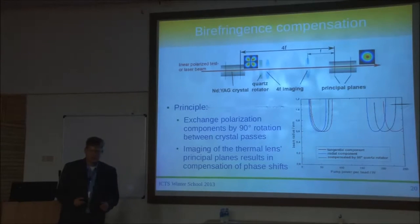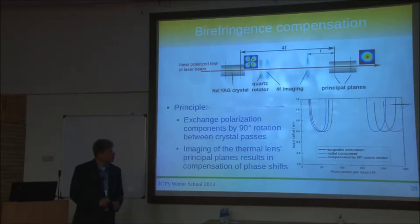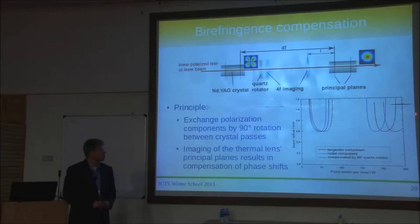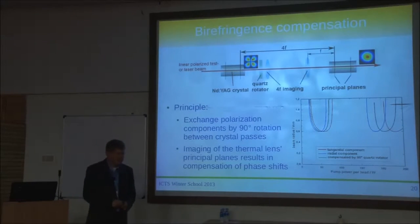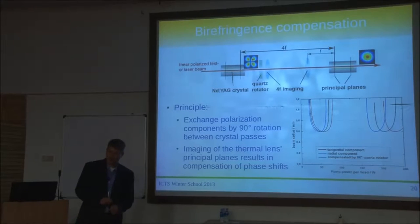If you do the ABCD matrix calculation with two crystals and include the thermal lenses, you end up with a compensated stability curve. With the radial/tangential compensation via the 90-degree imaging, both polarization components see effectively the same stability range, restoring linearly polarized operation.